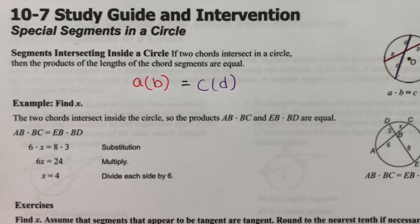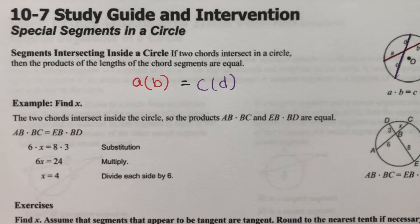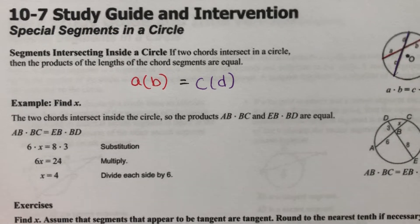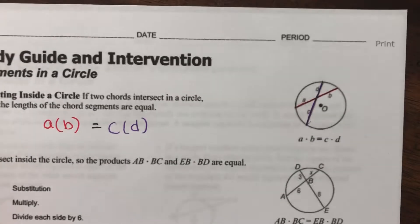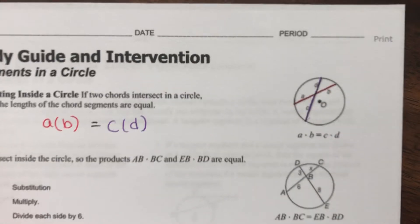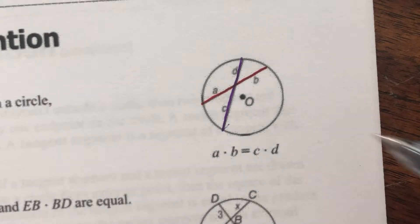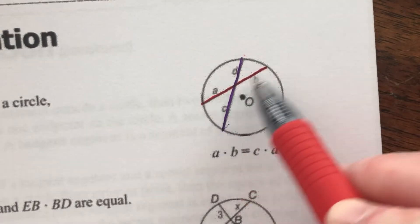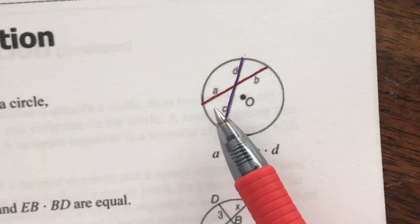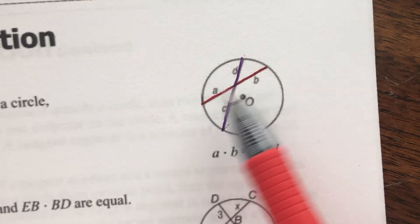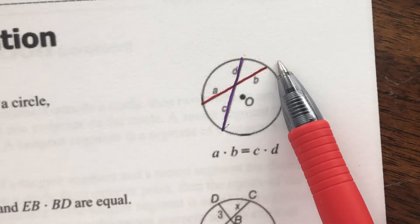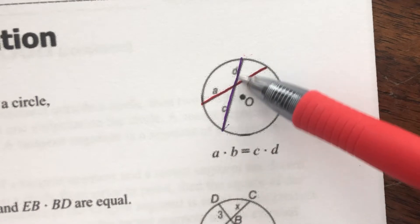All right, this video is reviewing 10-7 special segments in a circle. It should be a pretty quick video. It's a pretty easy lesson, so here we go. When you have a circle and you have two chords or two secants crossing each other, the portion of the line inside the circle, so here to here or here to here, when you multiply the two segments together, this one chord is split up into two segments by this intersecting line.